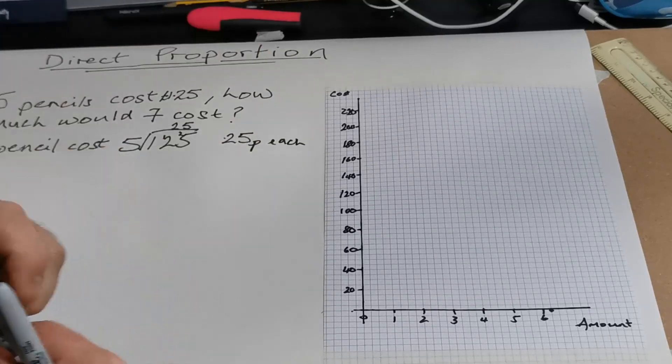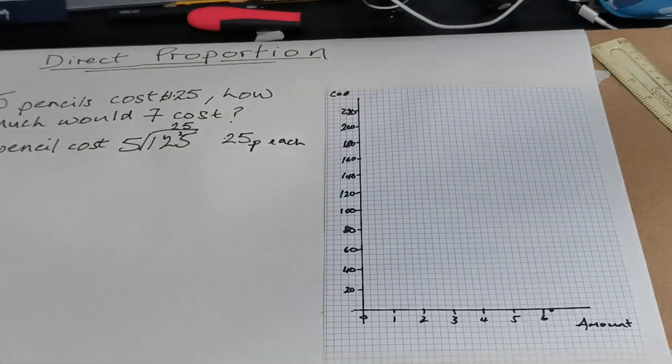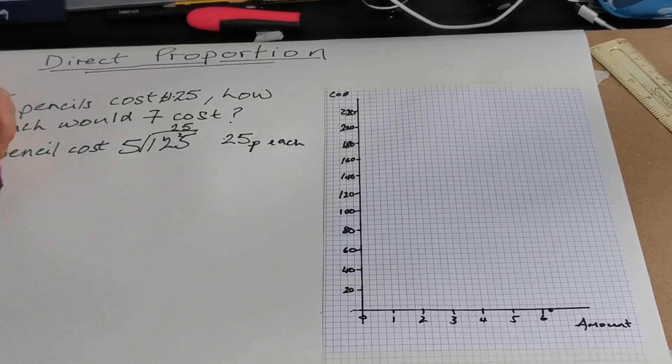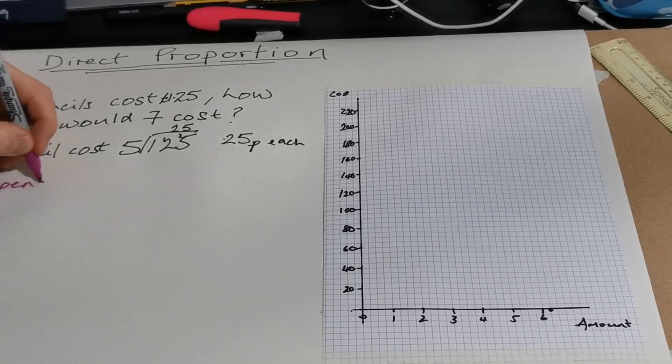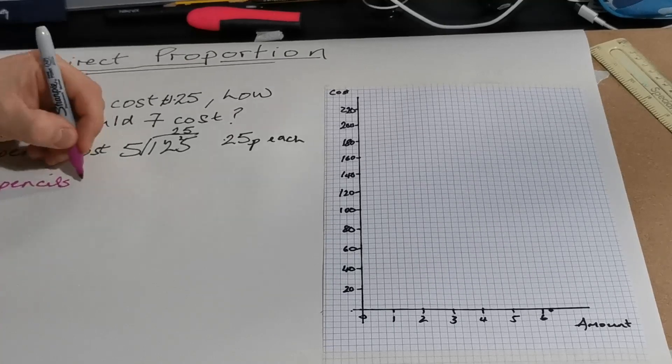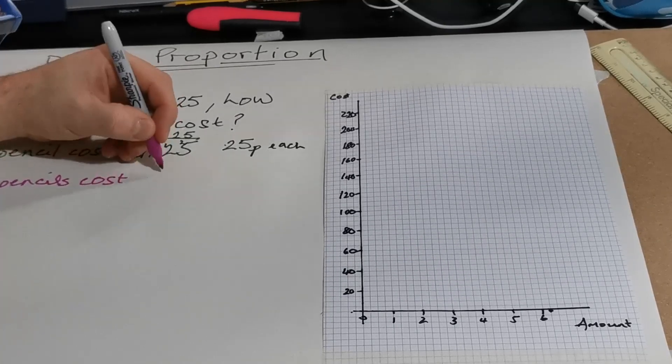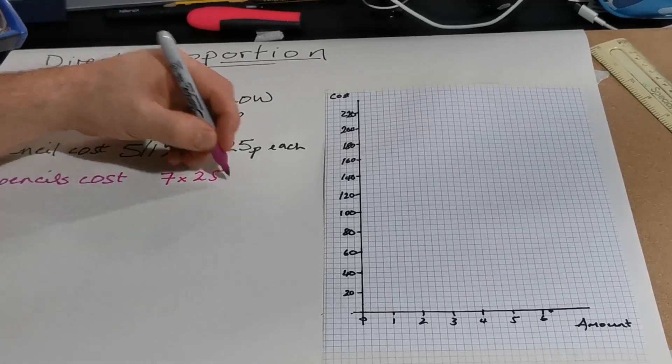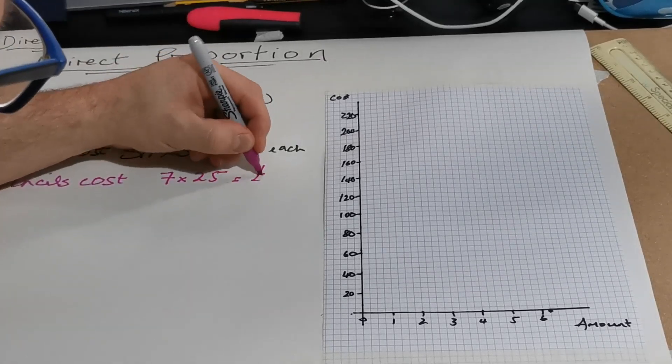And that's crucial. Because now if I wanted to find what seven costs, so seven pencils cost seven times 25, which is £1.75.